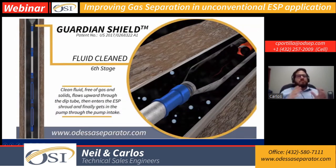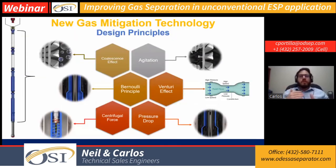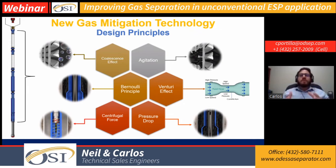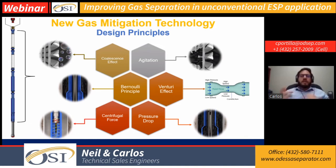To sum up the design principles: our tubing screens aim for the coalescence effect — making bubbles bigger so the rising velocity is higher, while always avoiding turbulence. Turbulence creates small bubbles that are very difficult to separate later. The two separator bodies use the Bernoulli principle — mechanical energy conservation — and the Venturi effect, with pressure and velocity changes at key points, always avoiding turbulence and maximizing separation efficiency. The tubing screens and deep tube are also designed to minimize pressure drop so production is not negatively affected.